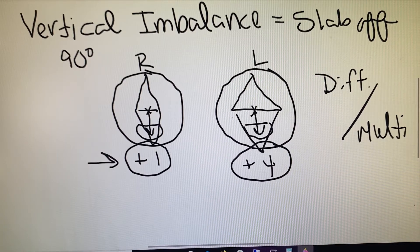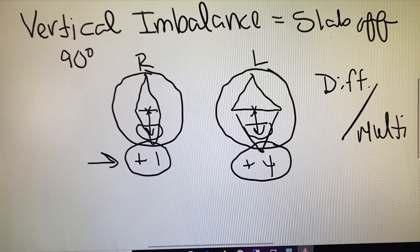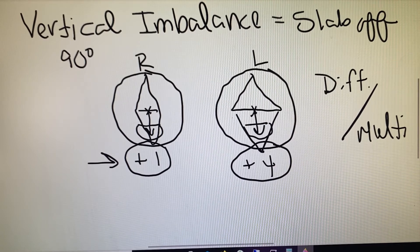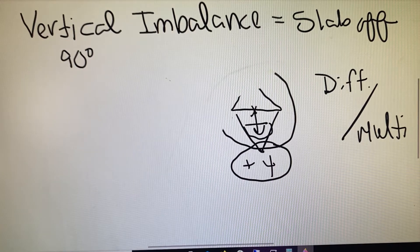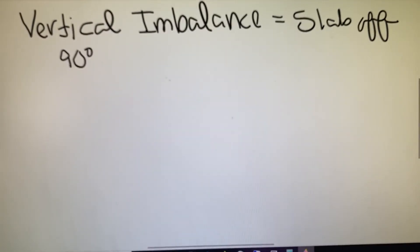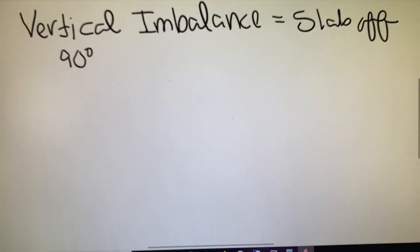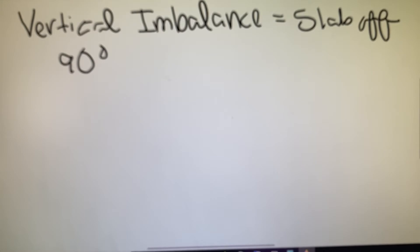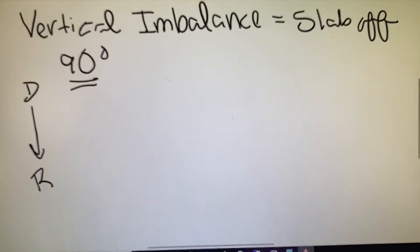For purposes of our example we're just going to use a lined bifocal, and we're going to work through a quick set of math for calculating vertical imbalance and then prescribing slab off. Anytime we're talking about vertical imbalance or the prescribing of slab off, we need to know the difference between the prescription in the right eye and the left eye at the 90th meridian, because we're talking about vertical movement — from the distance portion of the lens into the reading portion — which is the 90th meridian. So power at 90 first.